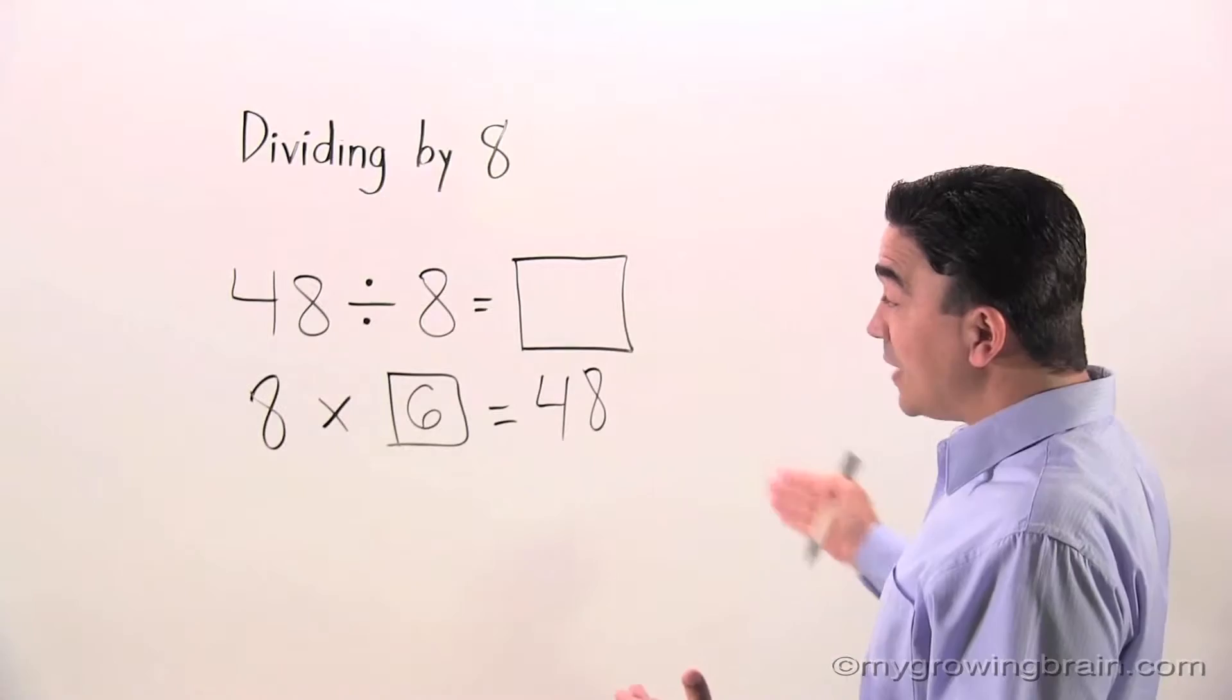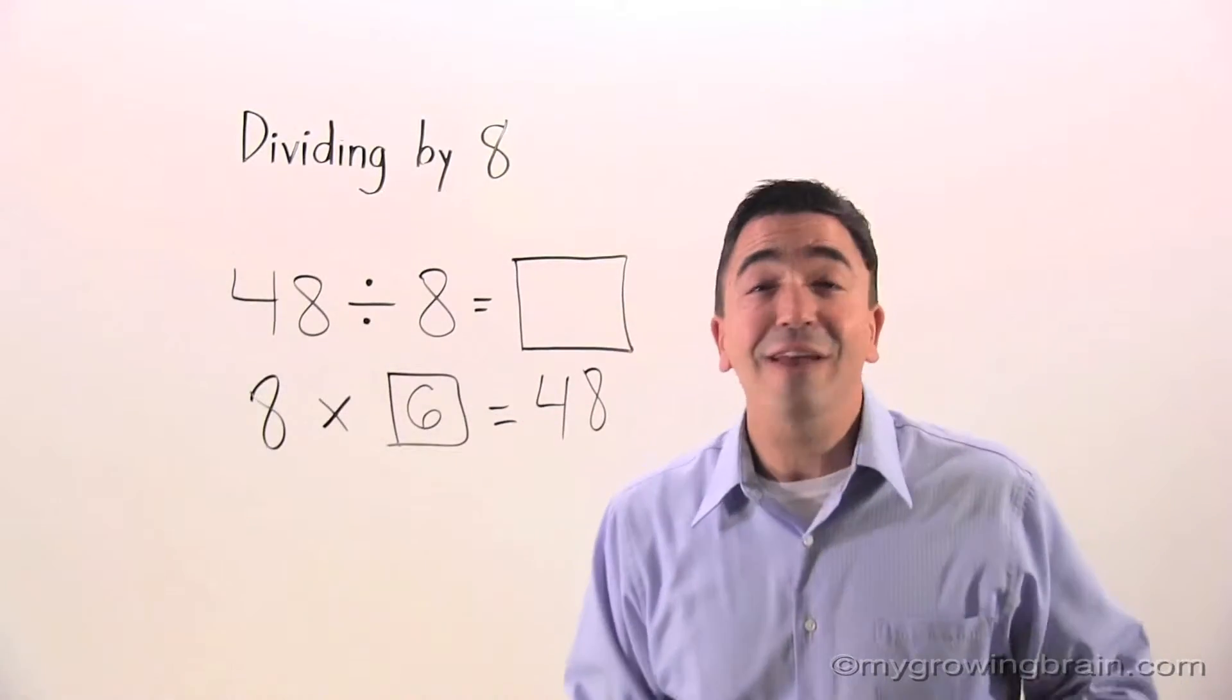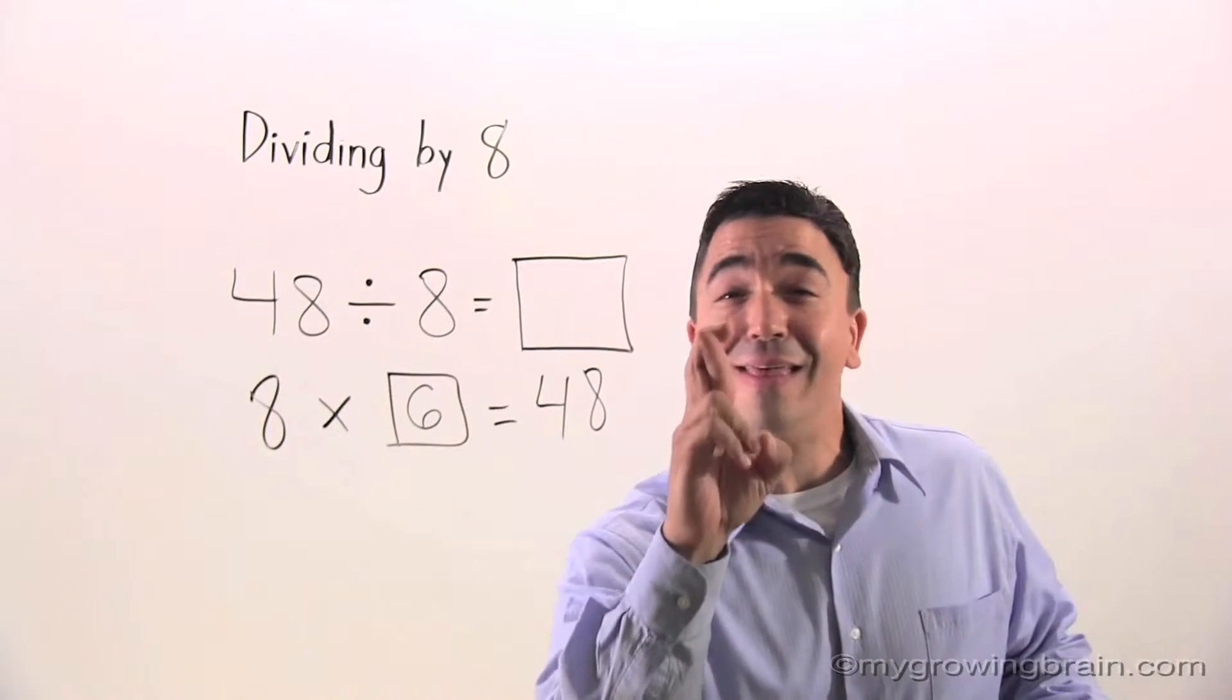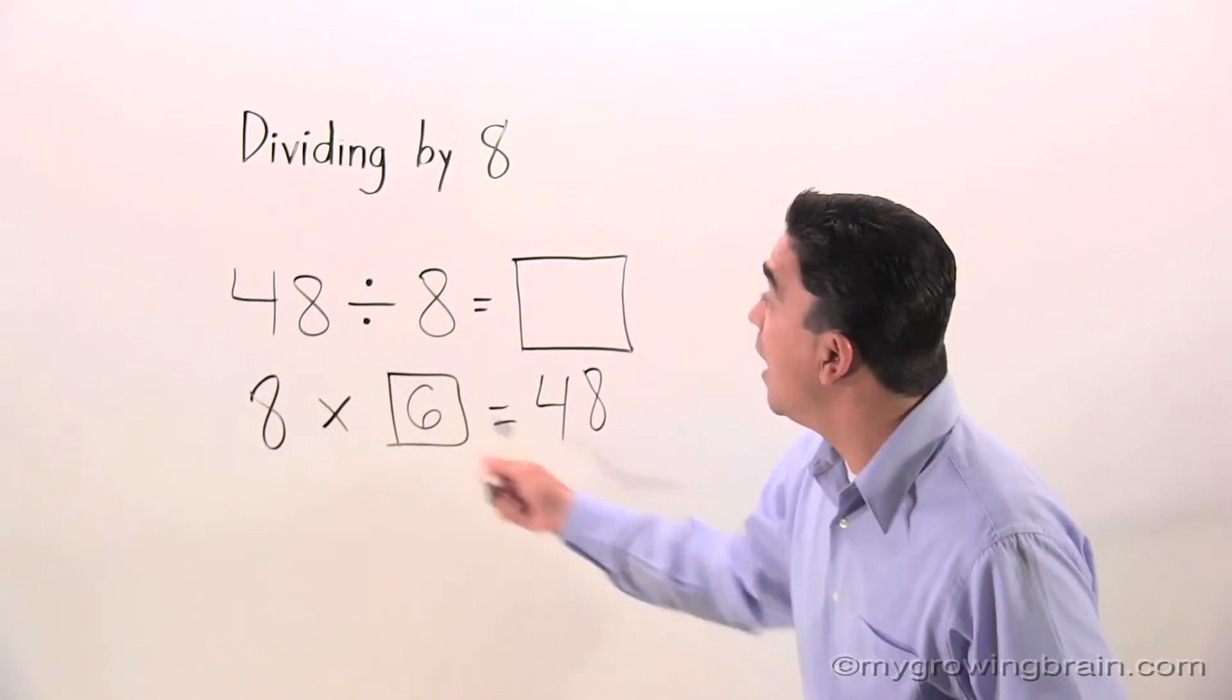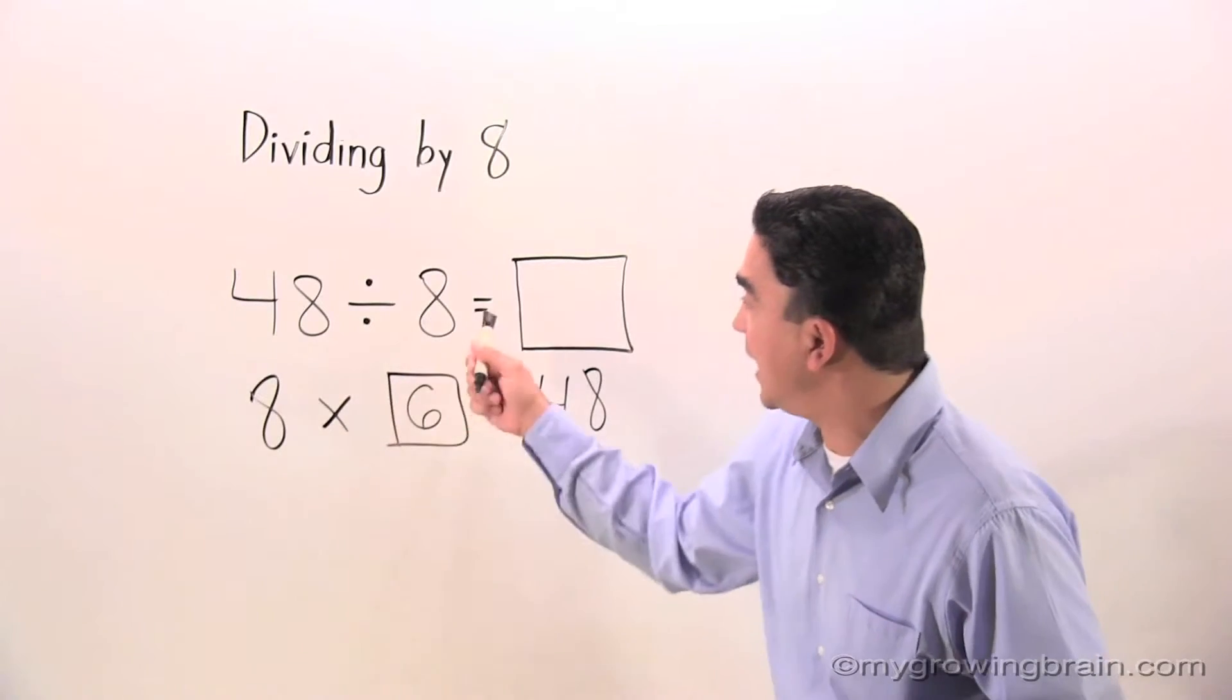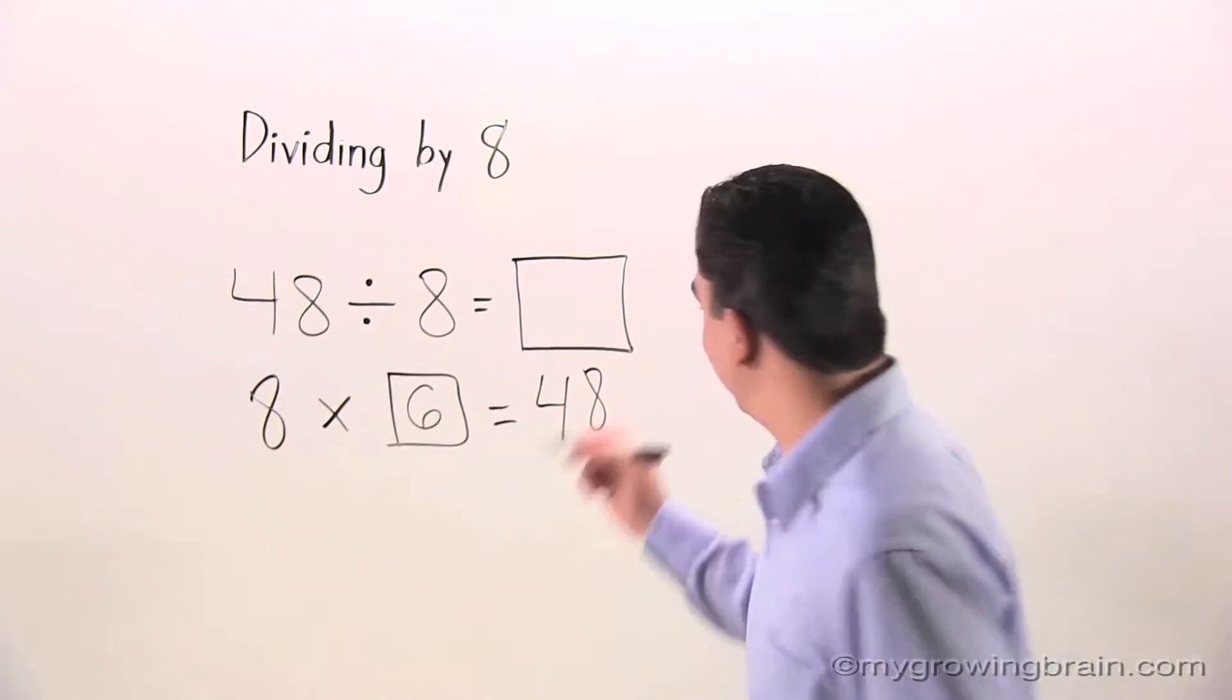So, now I know that 8 times 6 is 48. Let's go back to our division problem because division and multiplication, they go together like this. Watch. 48 divided by 8 equals... What? That's right. 6.